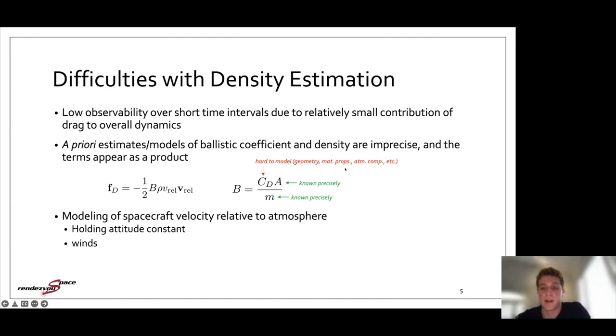It's a function of the geometry of the spacecraft, material properties, and even atmosphere composition because of the interactions of molecules with the surface of the spacecraft. And another difficulty is modeling the spacecraft velocity relative to the atmosphere. Even if we hold the attitude of the spacecraft constant, since to the first order the atmosphere co-rotates with the Earth, as we orbit around the Earth, the relative flow velocity will change with respect to the attitude of the spacecraft. And also, a lot of times we neglect the inclusion of winds. We assume that the atmosphere co-rotates with the Earth, but if there's considerable upper atmospheric winds, any estimate we get could be potentially biased.